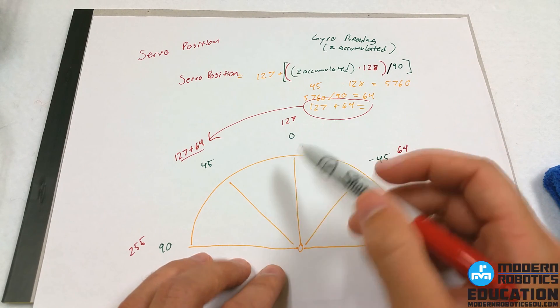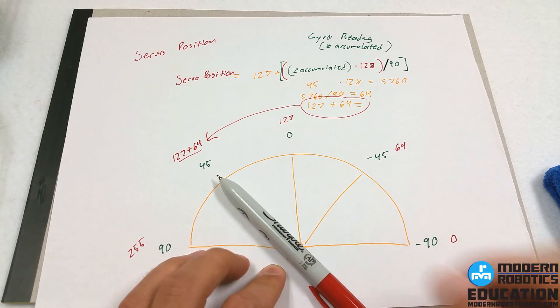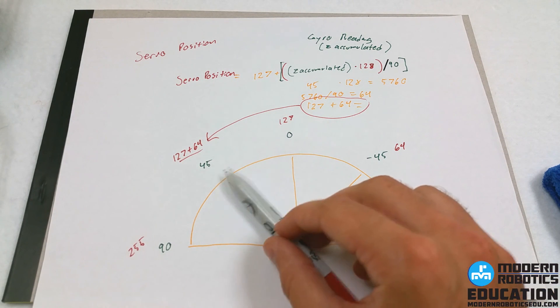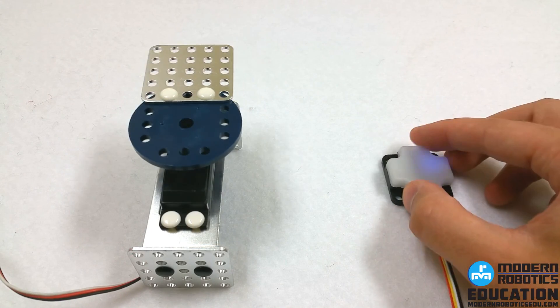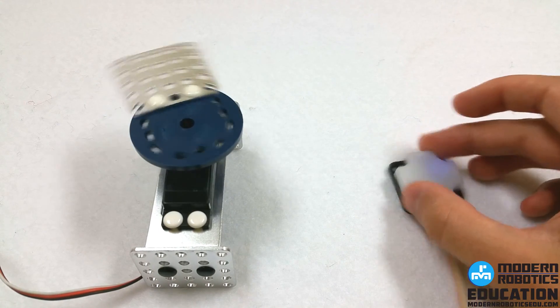So if we have it at 45 degrees here, which means it's pointing in this direction, the equation spits back out 127 plus 64, so it's pointing at 45 degrees. And you can try that for different ones too. You'll see that it always lines up. Go ahead and watch the videos below of putting together a code to make this work so that the gyroscope can control the servo.